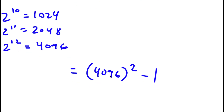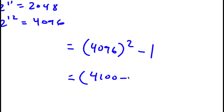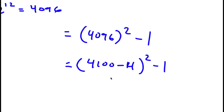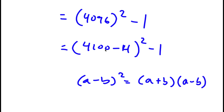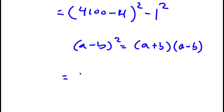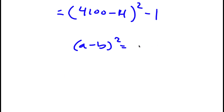Now 4096 is the same thing as 4100 minus 4, so I have that squared minus 1. If I have something in the form a minus b squared — sorry, that's actually a squared minus 2ab plus b squared.